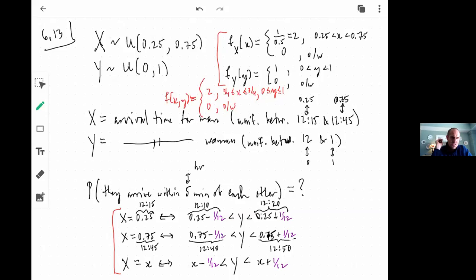It doesn't have to be 12.25 and 12.75. We can shift everything over between zero and one. And same thing for Y, except we have 12 corresponding to zero and one corresponding to one.